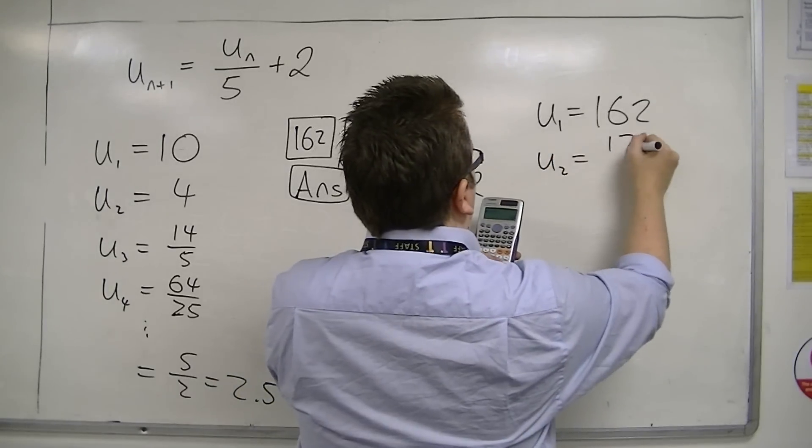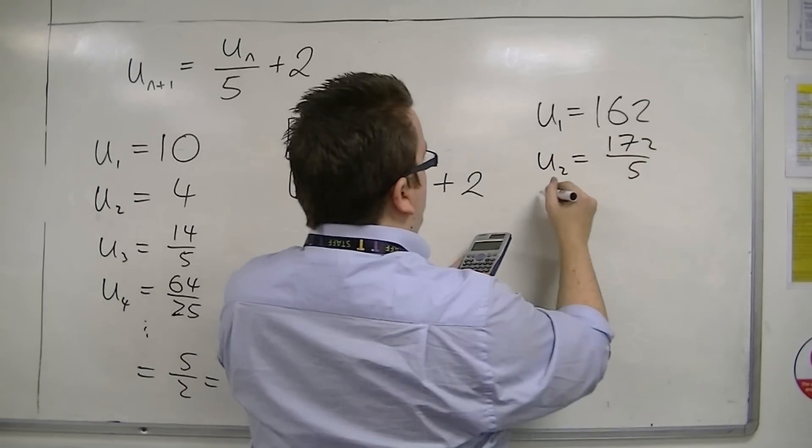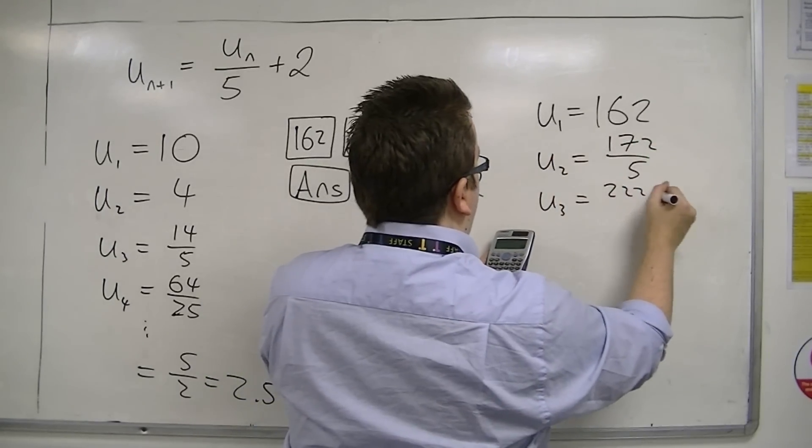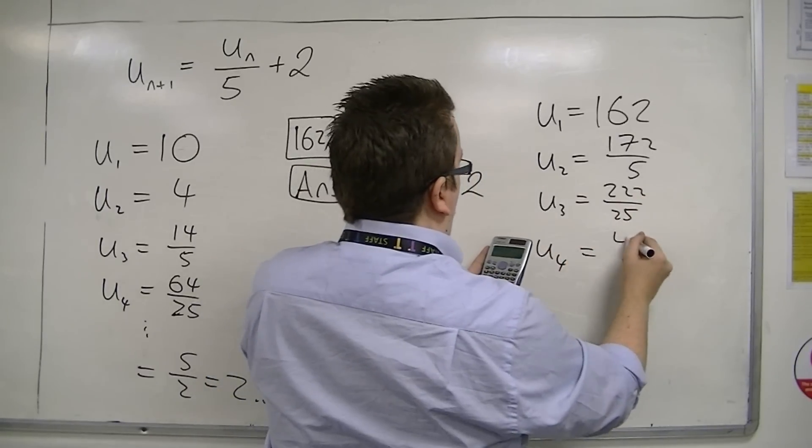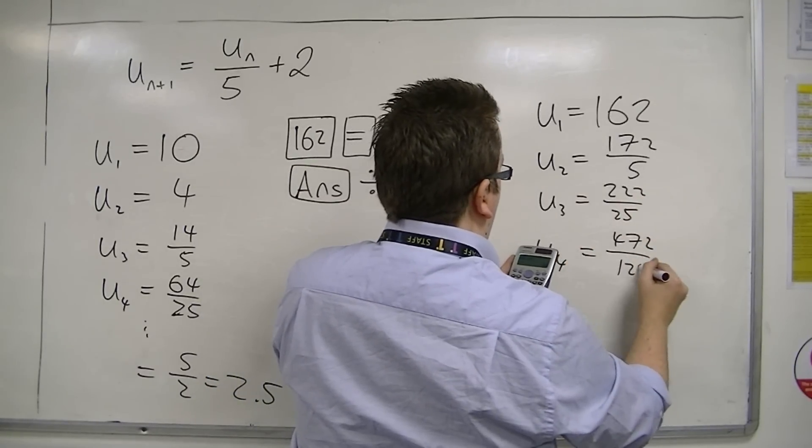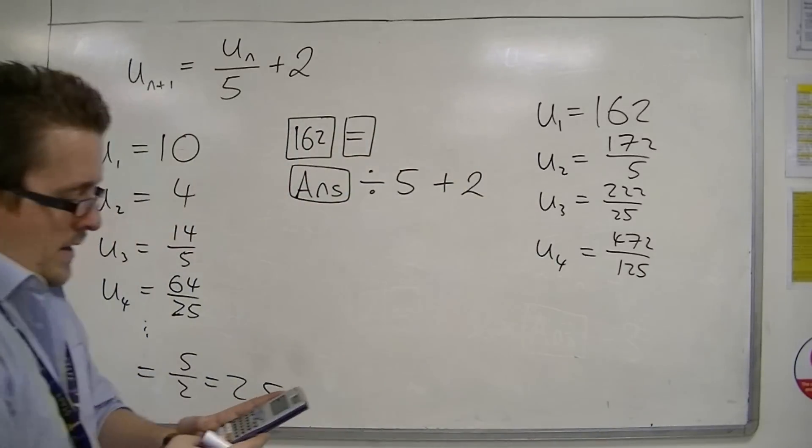U2 is 172 over 5. Press equals again. U3 is 222 over 25. Then U4 is 472 over 125, and keep pressing equals.